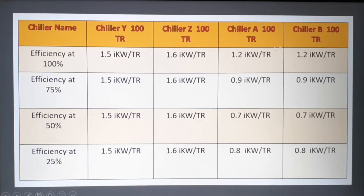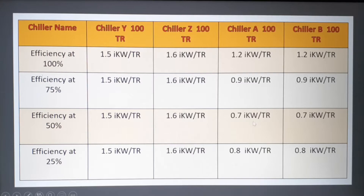For VFD chillers A and B, the efficiency varies with load: at 25% load it is 0.8 kW per TR, at 50% it is 0.7 kW per TR, at 75% it is 0.9 kW per TR, and at 100% it is 0.2 kW per TR. Running the chiller at 50% gives the most savings, as it draws very little power to produce 1 TR. This is what part-load efficiency means — these non-VFD chillers do not have this characteristic.